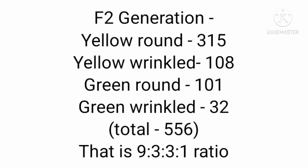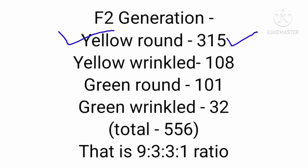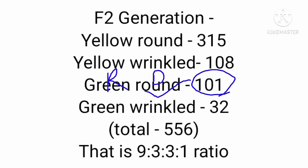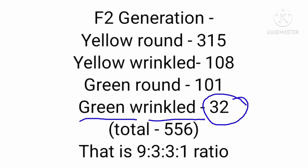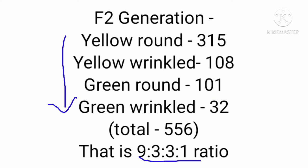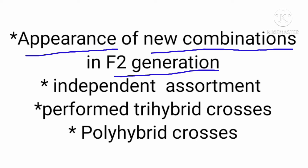Mendel performed ample dihybrid crosses and reciprocal crosses with different combinations. Every time he got the same pattern of results: uniform expression of both dominant traits in F1, and in F2 both dominants in large numbers, one dominant and one recessive in less numbers, and both recessives least in number. Thus in all Mendelian dihybrid crosses the ratio of four different phenotypes was 9:3:3:1, called the dihybrid ratio.